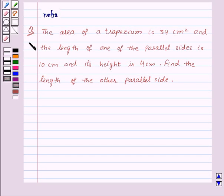Hi and welcome to the session. Today we will discuss the following question. The question says the area of a trapezium is 34 cm² and the length of one of the parallel sides is 10 cm and its height is 4 cm. Find the length of the other parallel side.